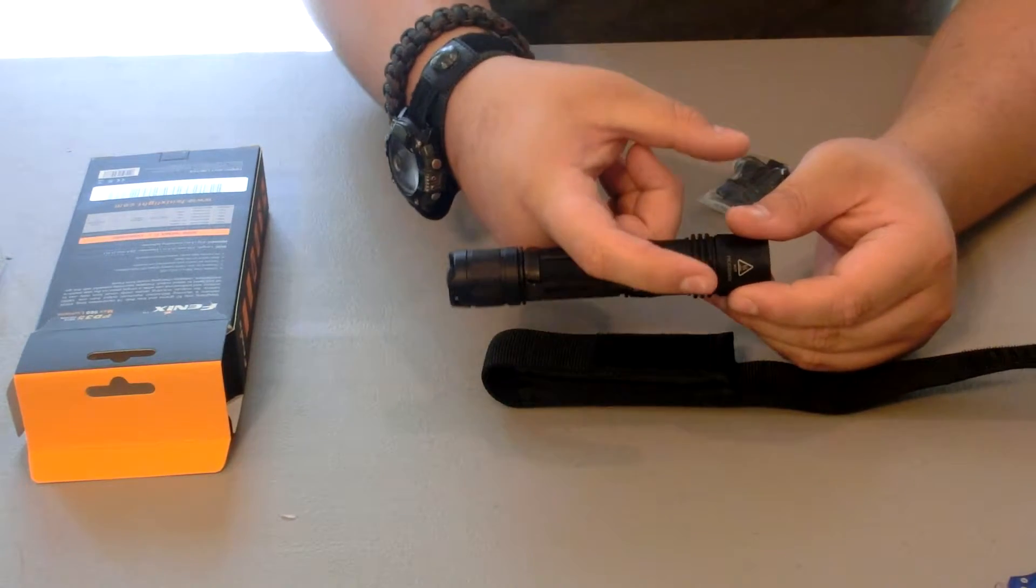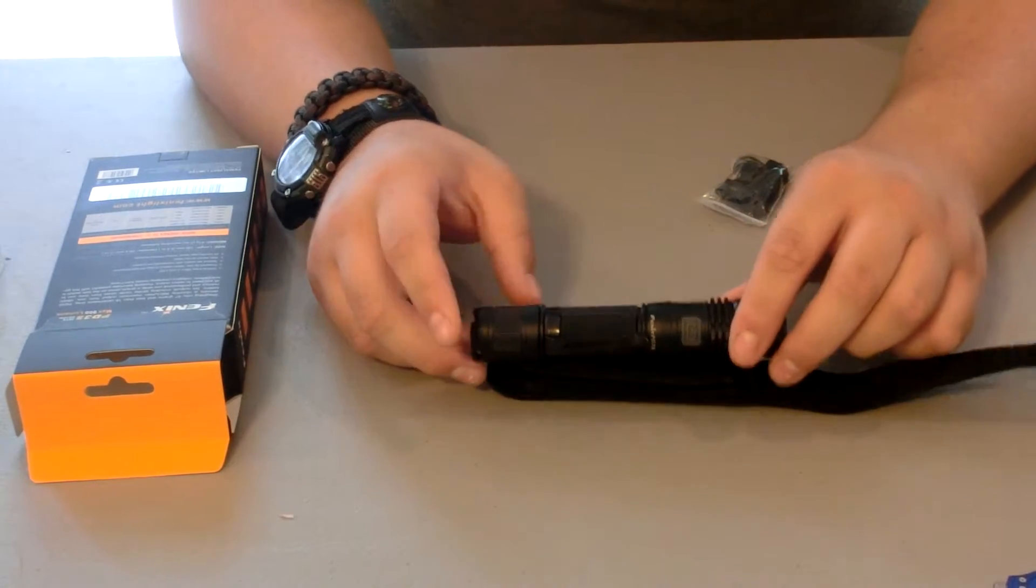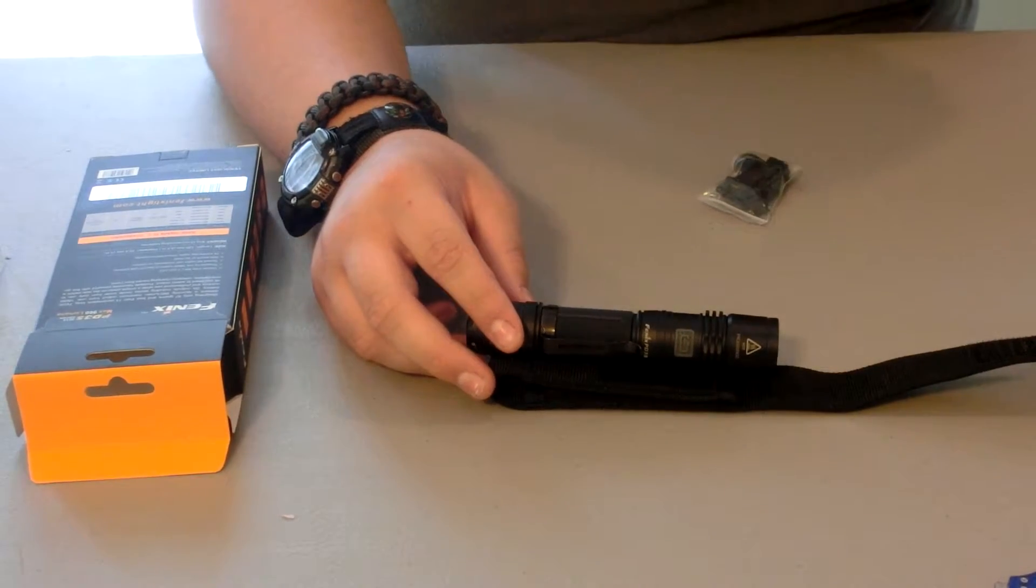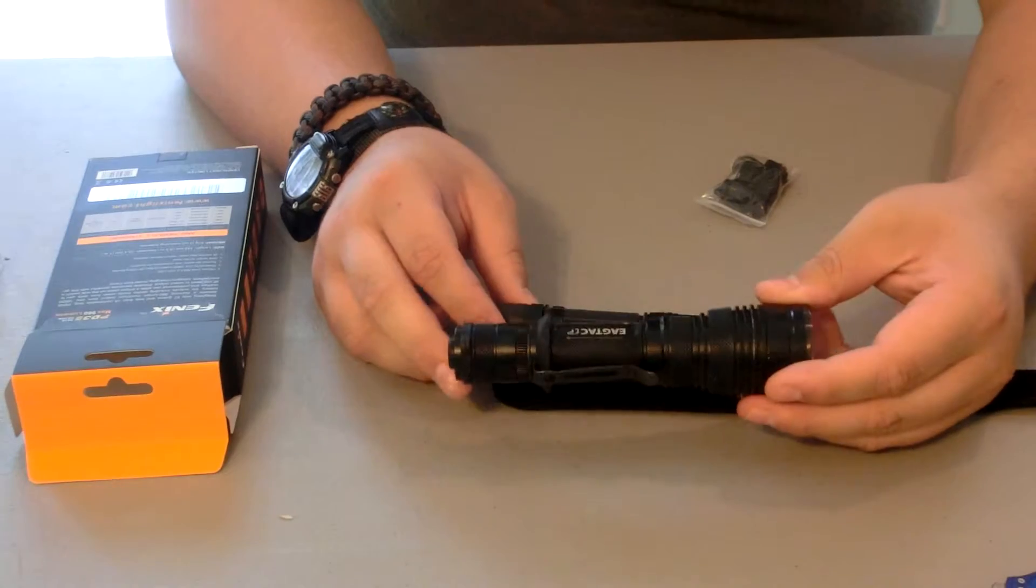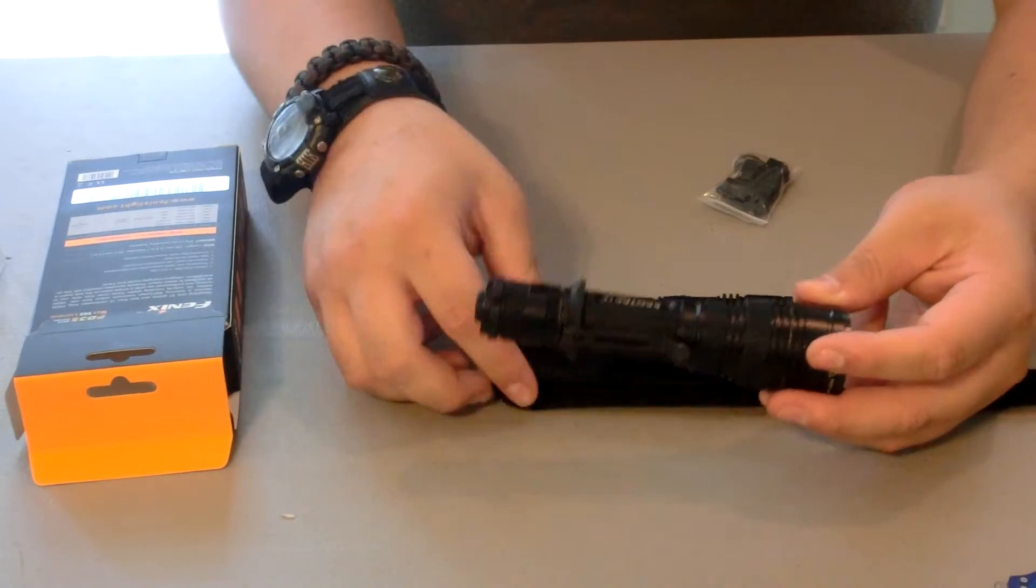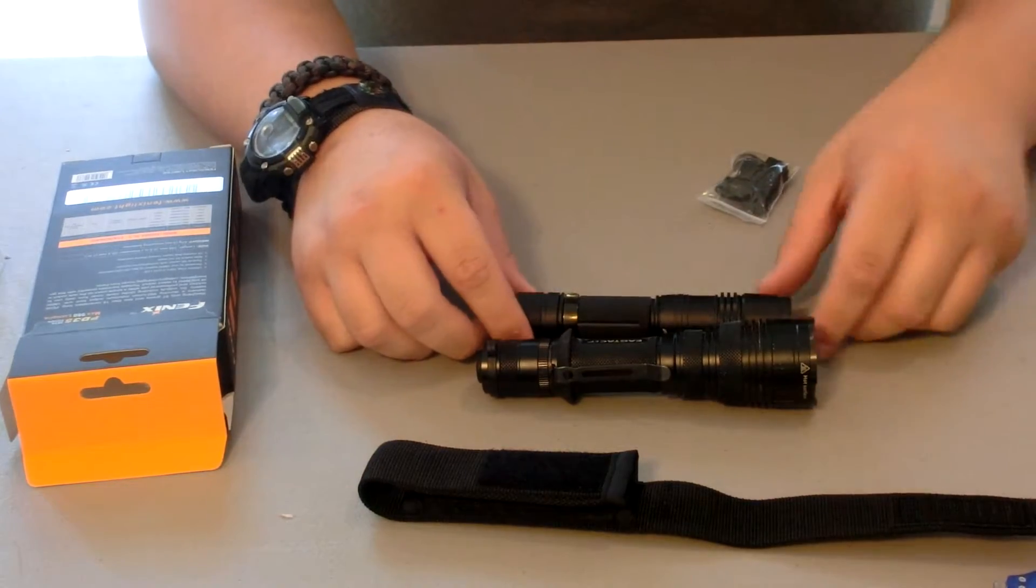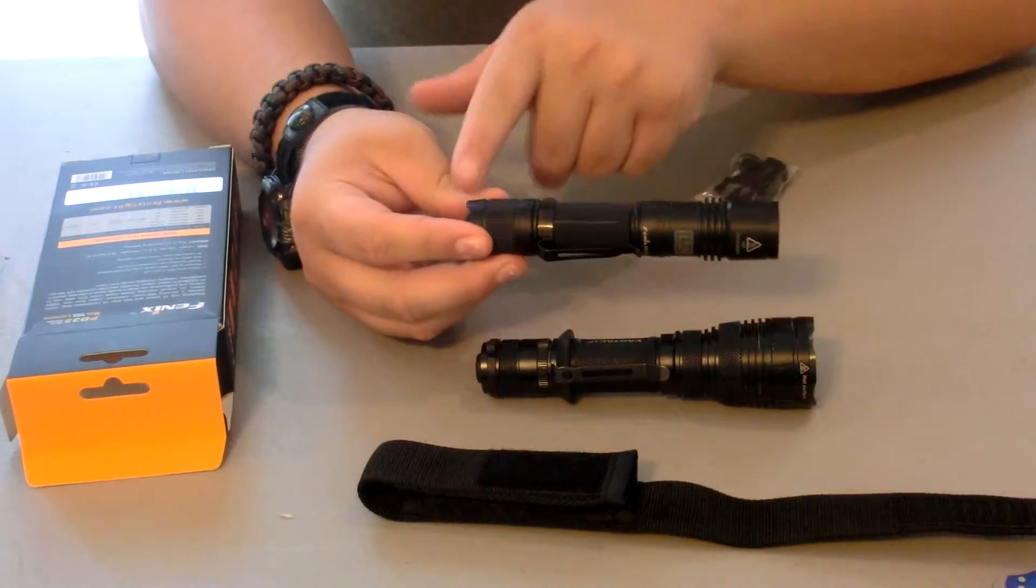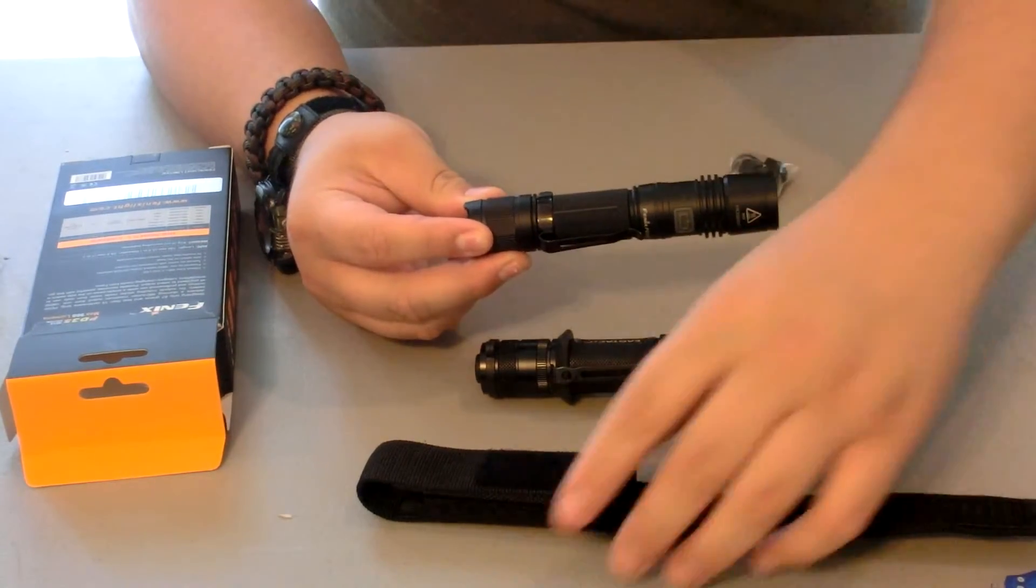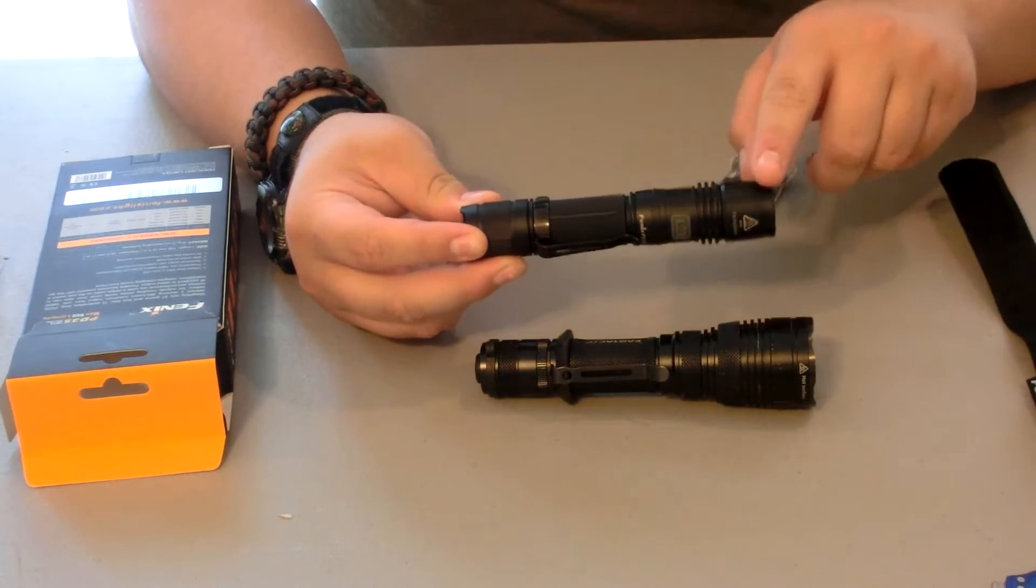But then once they get up to the bulb area it expands out a lot, like the EagleTac G25C2. About the same lumens but look at the size difference. See what I mean?